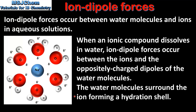The water molecules surround the ion forming a hydration shell. On the left we can see a diagram of a sodium ion surrounded by water molecules. The negative dipoles of the water molecules are attracted to the positive charge of the sodium ion — these attractions are ion-dipole forces. In this example the sodium ion is surrounded by 6 water molecules, which is called a hydration shell. If the ion has a negative charge, it's attracted to the positive dipoles of the water molecules.